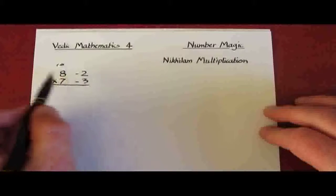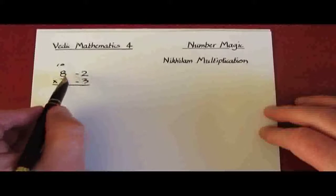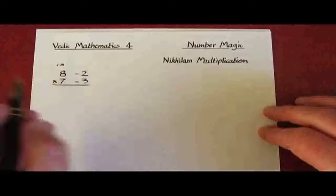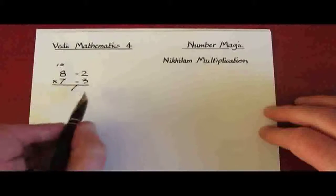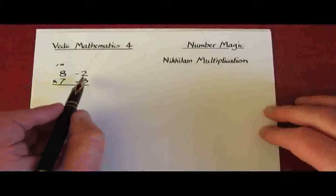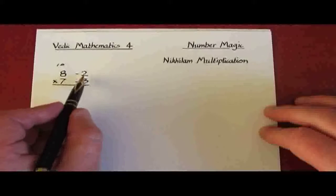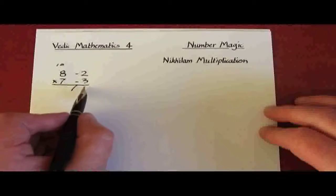It doesn't mean 8 take away 2, it actually means that 8 is less than 10 by 2. The answer comes in two parts: a right hand part and a left hand part. For the right we multiply the two deficiencies together, 2 threes are 6.